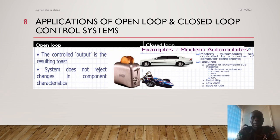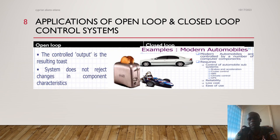Applications of open loop and closed loop control systems: these are divided into two columns. For open loop, the application is the bread toaster system, which does not change in component characteristics. For closed loop, the application is the modern automobile, which has a feedback loop with a sensor, and the output is fed back to the input for the purpose of controlling the system.